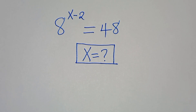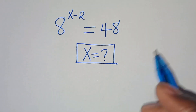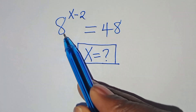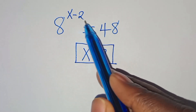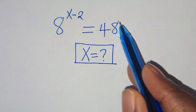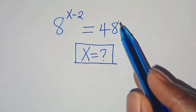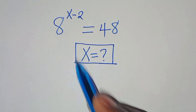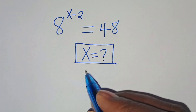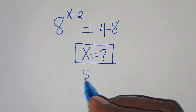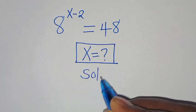You're welcome to solve this nice exponential equation, which is 8 to the power of x minus 2, equal to 48. This is the value of x we need to find. Now let's provide a solution from here.